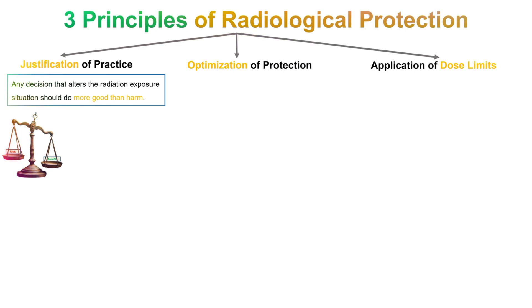For example, a deterministic biological effect such as cataract in the lens of the eye, or a radiation-induced stochastic, or probabilistic, carcinogenic effect.